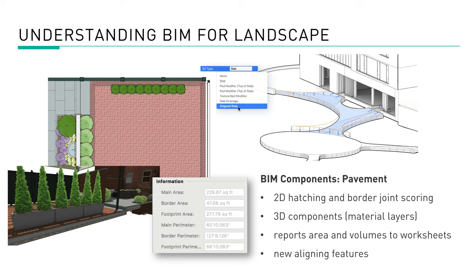Another BIM object in the landscape is surfacing. Objects like hardscapes or landscape areas bring similar benefits. Whether you're using built-in 2D hatching, or 3D texturing, layering components such as stone over setting base, which is over compacted aggregate — you're building these layers up, and all of this can be included in a BIM hardscape. Documenting is made even easier by reporting your built-in area, perimeter, and volume calculations.